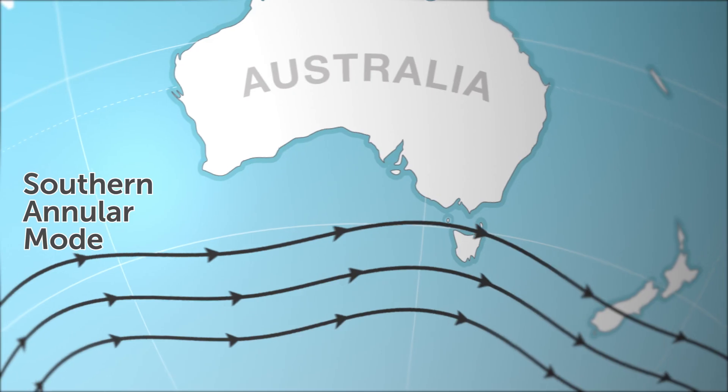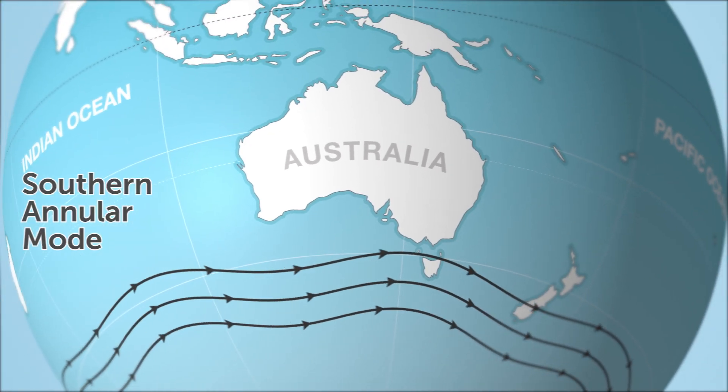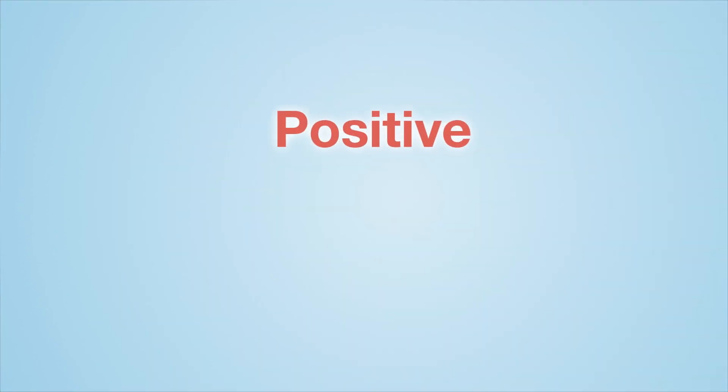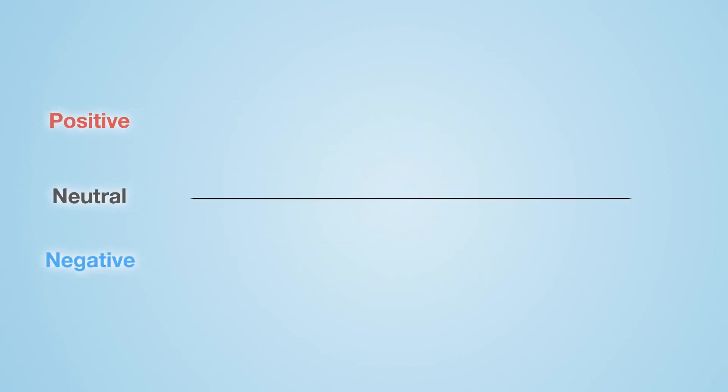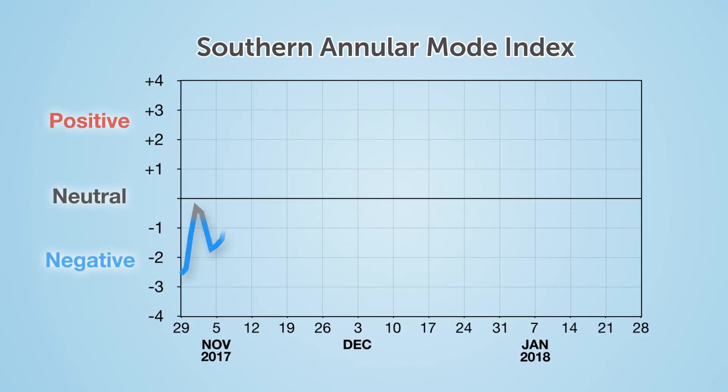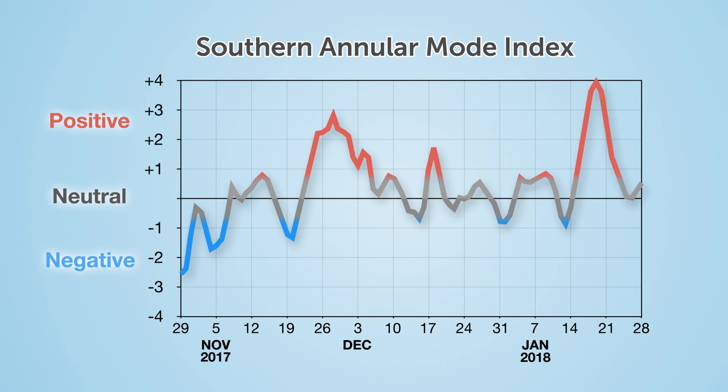This shift of the winds away from their normal position can disrupt weather systems around the Southern Hemisphere, including those that bring rainfall to southern Australia. SAM varies between three phases: positive, neutral and negative. These phases last around two weeks but can sometimes hang around even longer.